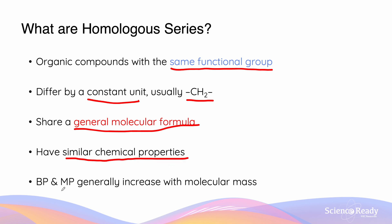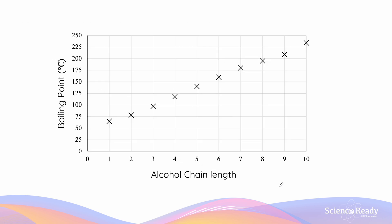Within a homologous series, the boiling point and melting point will generally increase with molecular mass as we are adding CH2 onto the end chain of the particular functional group. Here's a graph which demonstrates the boiling point of various alcohols with increasing chain length. We can see that as we increase the chain length, we are adding more CH2 groups, increasing the boiling point, and similarly we should expect the melting point to increase as well.